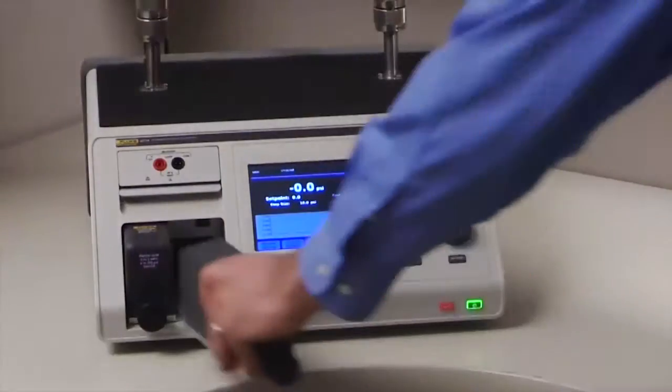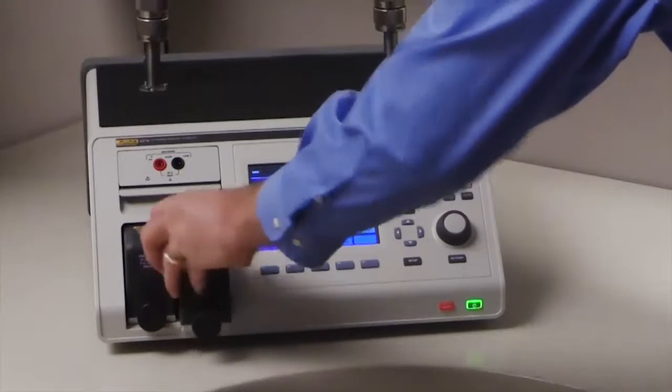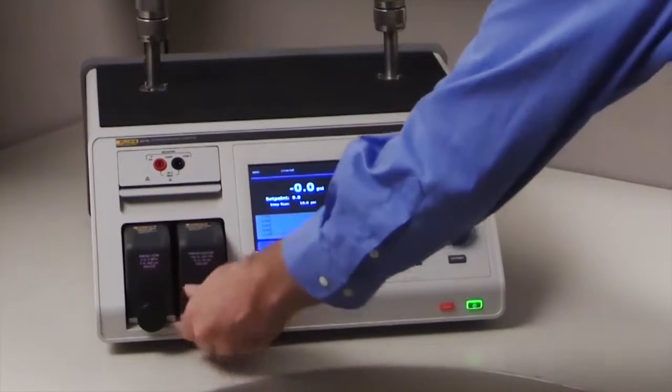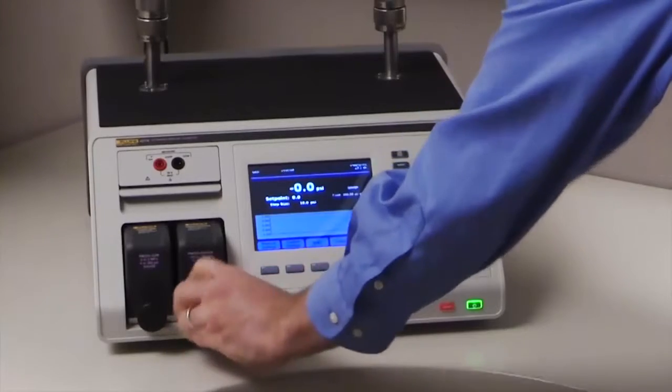Modules are easy to install. Simply slide a module into one of the two available slots, then turn the torque limiting knob until it clicks.